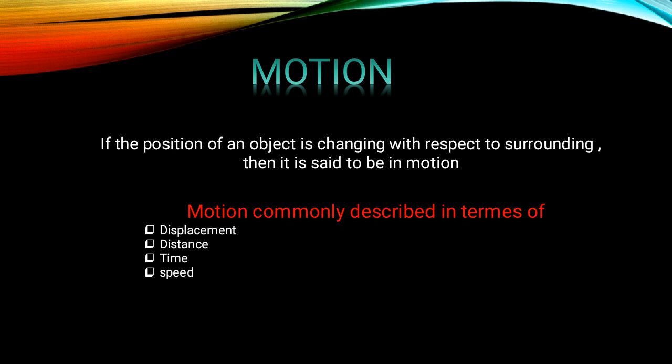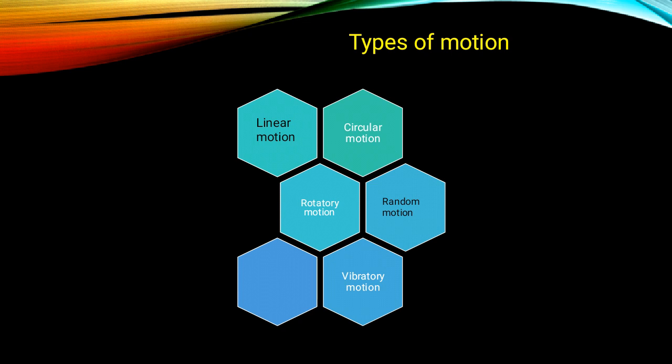Motion is commonly described in terms of displacement, distance, time, and speed. If we observe carefully, we will find that everything in the universe is in motion. However, different objects move differently. Some objects move in a straight line, some in a curved path, and some move in other ways. According to these, there are several types of motion.